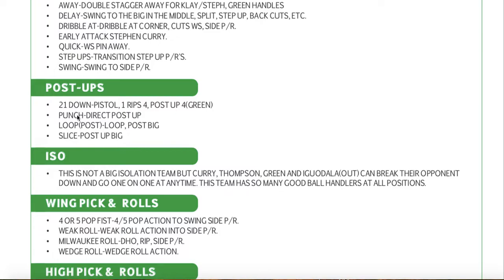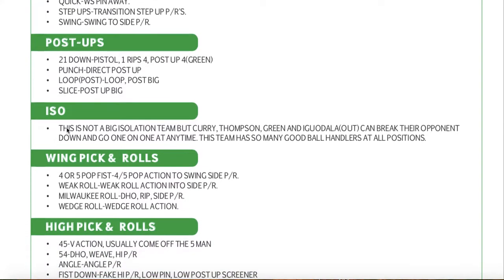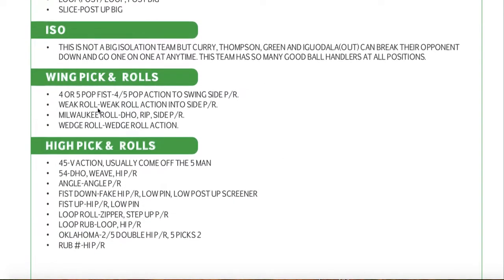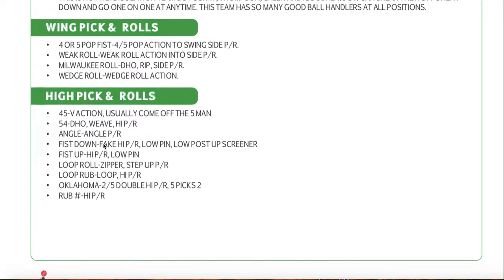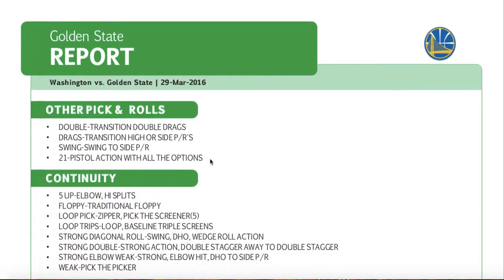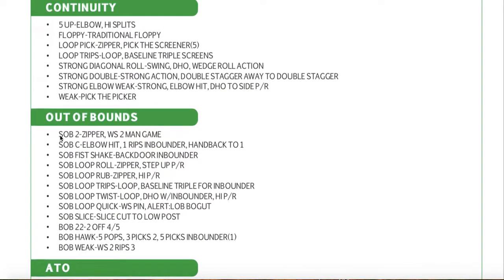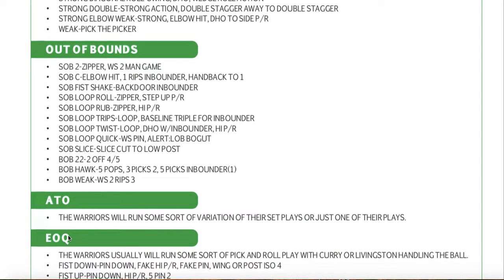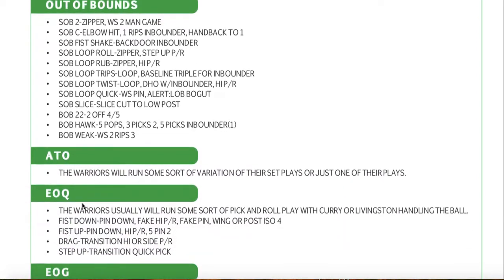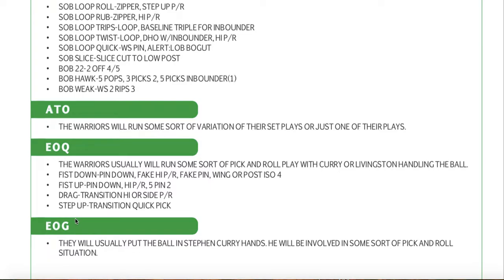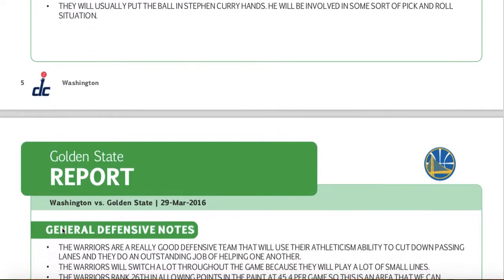Within post-ups, they run 21 down, punch, loop post, and slice. They don't run many isos. Here are all their wing pick-and-roll play calls. Wedge roll is a common Spurs action known throughout the league. Some high pick-and-rolls, other pick-and-rolls, continuity sets, side out of bounds, baseline out of bounds, after time out plays, end of quarter, and end of game plays.